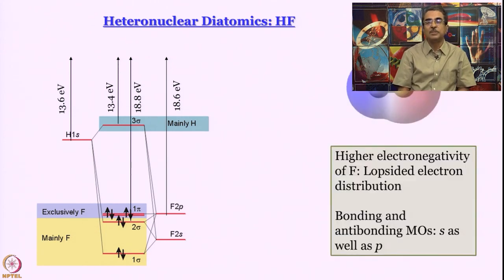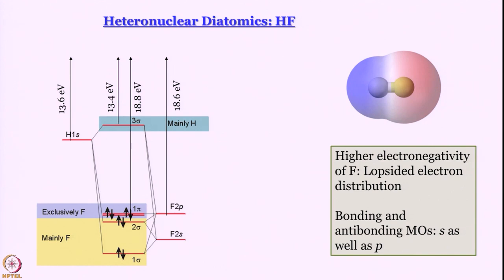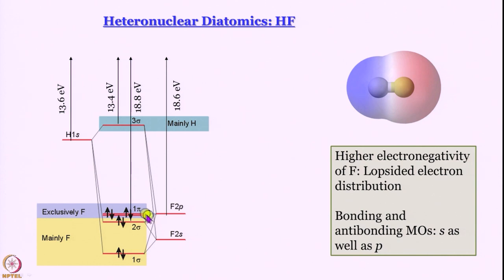What we encounter is a lopsided electron distribution. Consider the electron configuration: I have 1 electron from hydrogen and 7 electrons from fluorine, and once you fill them in there is no memory — you just fill in increasing order of energy for molecular orbitals. All the electrons are in either bonding or non-bonding orbitals, which are either mainly fluorine orbitals or exclusively fluorine orbitals. That means in HF the electron density is very strongly localized over fluorine, and hydrogen gets a very small share. It is a polar covalent bond, and an extreme case would be an ionic bond.